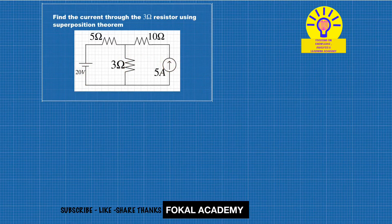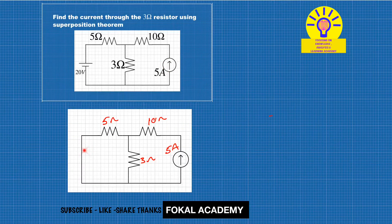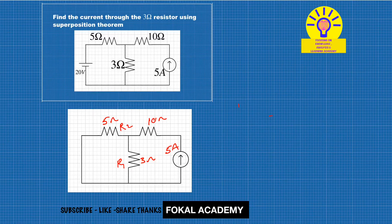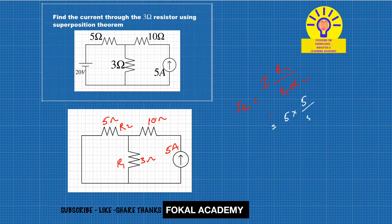After redrawing the circuit with the voltage source short-circuited, we have 5 ohms in parallel with 3 ohms. By applying the current divider rule, consider R1 as the 5-ohm resistor and R2 as the 3-ohm resistor. Current in R1 equals total current multiplied by R2 divided by (R1 + R2), which equals 5 amperes times 5 ohms divided by (5 + 3) ohms, giving us 3.125 amperes.